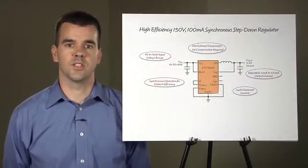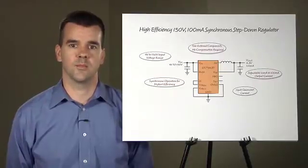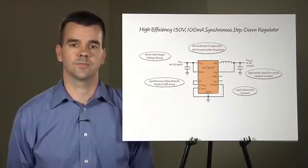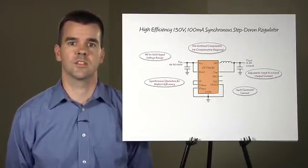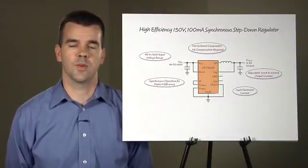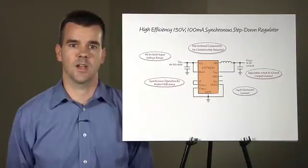The output voltage can be set from 0.8 volts to as high as the input voltage with an external resistor divider. The LTC3639 also includes three pin-selectable fixed output voltage settings of 1.8 volts, 3.3 volts, and 5 volts, minimizing component count and noise for these common applications.